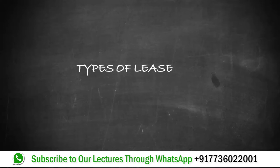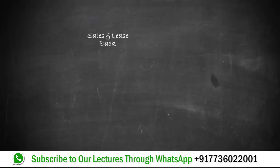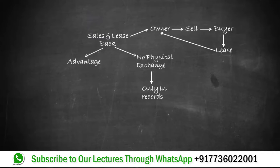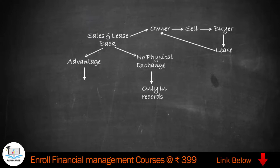Let us look at some types of lease. The first one is sale and leaseback. Here the owner of an asset will sell it to the buyer, who will in turn lease the asset back to the owner. In this kind of lease there is no physical exchange of asset — only a record transfer takes place. The advantage of this lease is that the lessee is in need of funds but wants the asset to be used continuously.